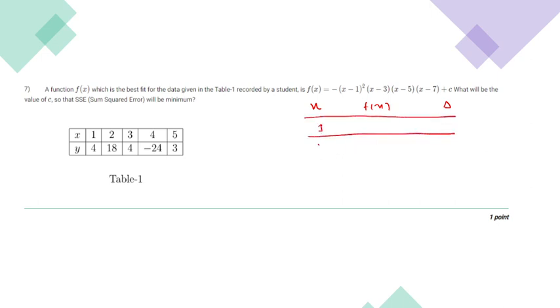For x equals 1, 2, similarly for 3, 4, and 5. So for x equals 1, if we substitute x in this equation, it will become 0, and the value will remain c.